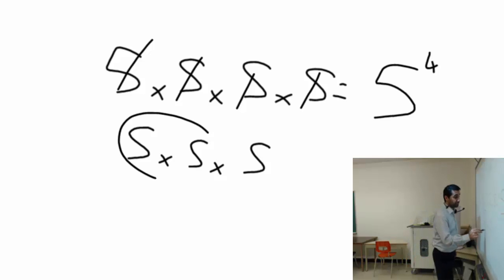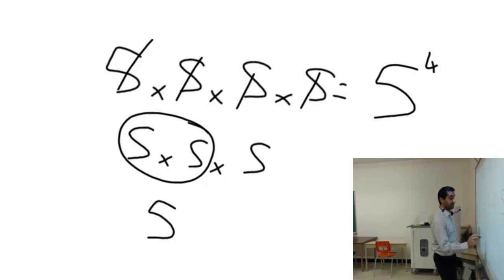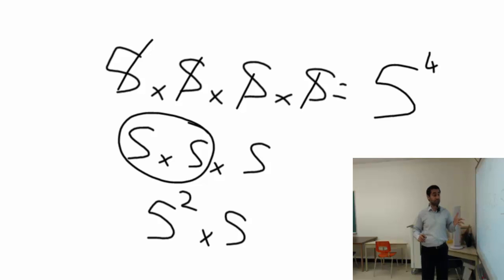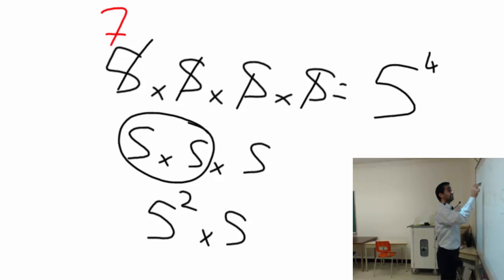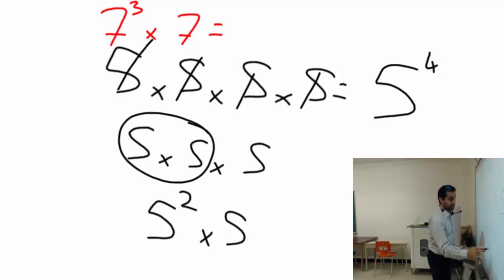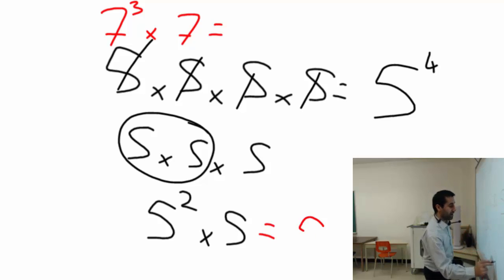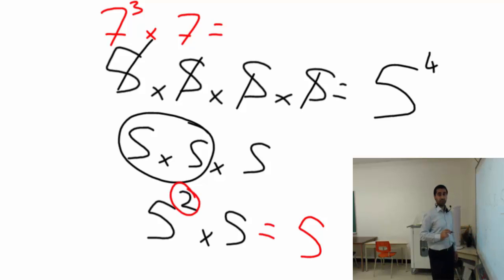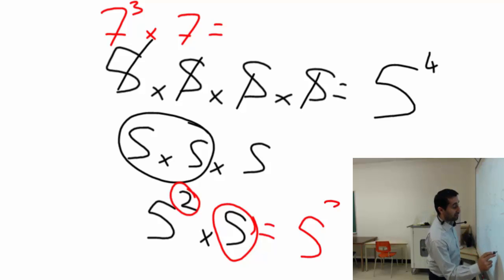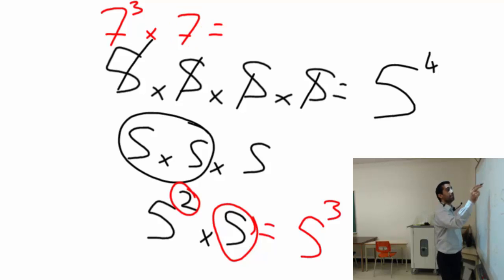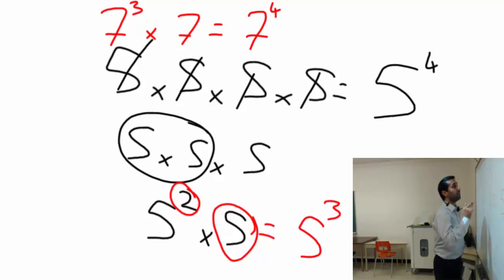Also remember that if you see 5 to the power of 2 times 5, you can combine them together. For example, 7 to the power of 3 times 7 — there are three sevens and one more seven next to it, so you add one more, giving you 7 to the power of 4.